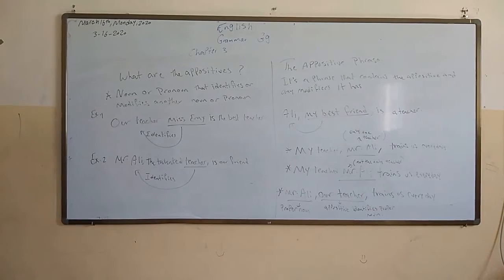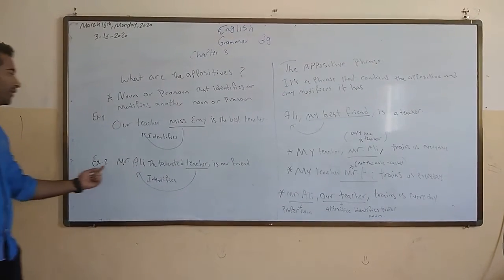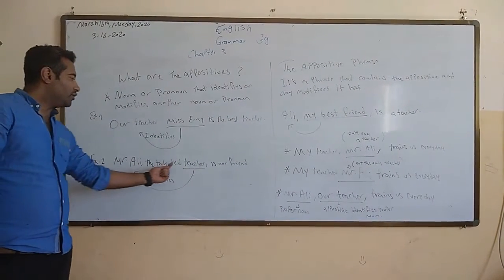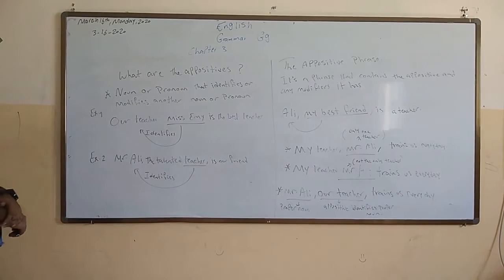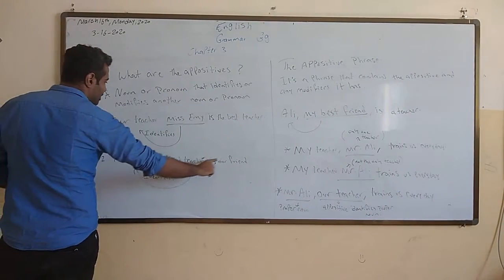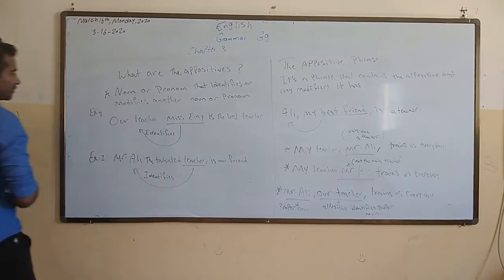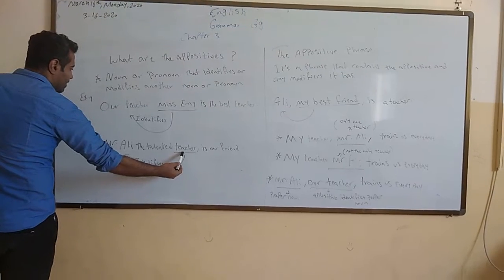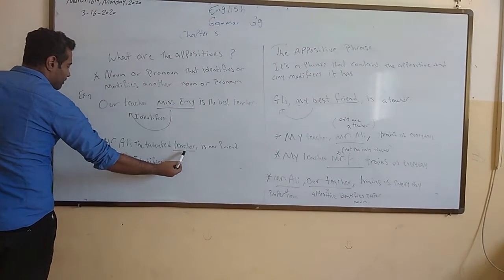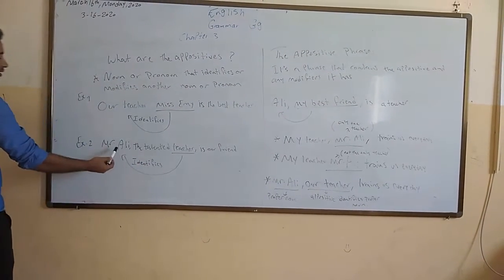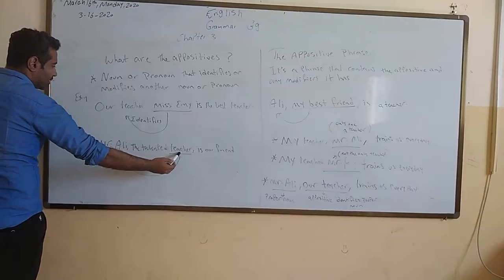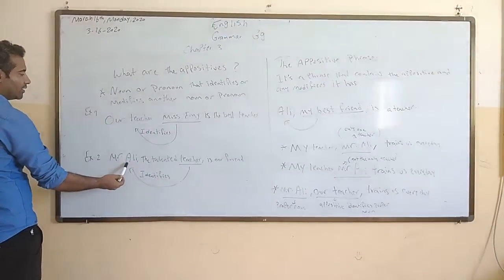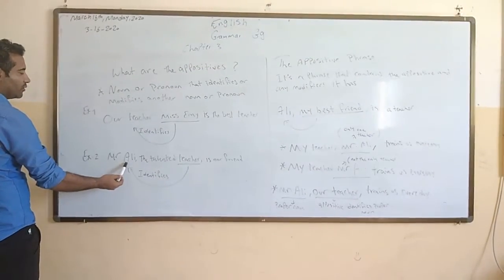Second example: 'Mr. Ali, the talented teacher, is our friend.' Here 'the talented teacher' is the appositive — it identifies Mr. Ali. So it's a noun that identifies another noun, that's why it's an appositive.